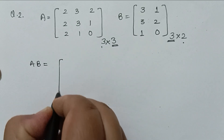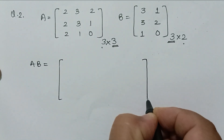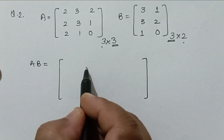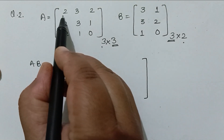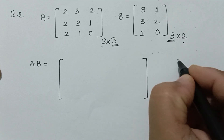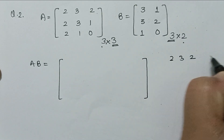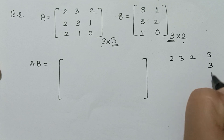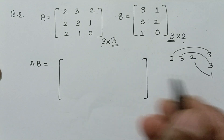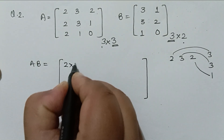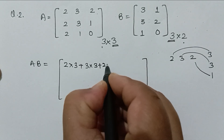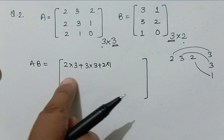The resulting matrix will have 3 rows and 2 columns. For the first element of matrix AB, we multiply the first row of matrix A with the first column of matrix B. So we multiply 2, 3, 2 with 3, 3, 1, giving us 2x3 plus 3x3 plus 2x1. This is the first element.